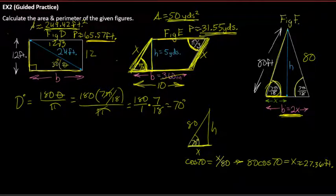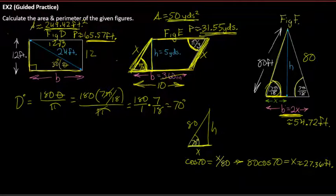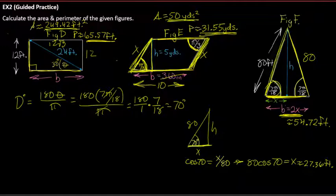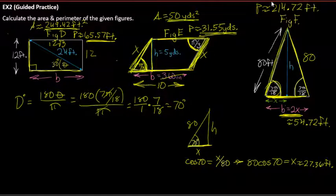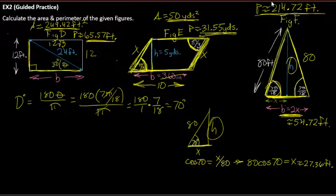The full base is 2 times 27.36, which is approximately 54.72 feet. Now we know all three sides: 54.72, 80, and 80. So the perimeter is 54.72 + 80 + 80 = 214.72 linear feet.